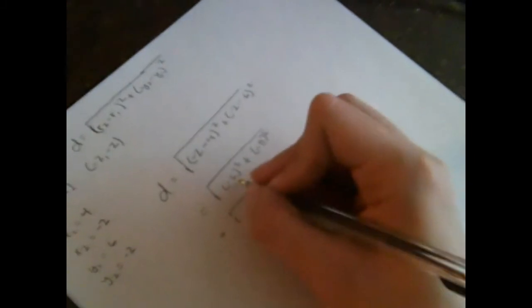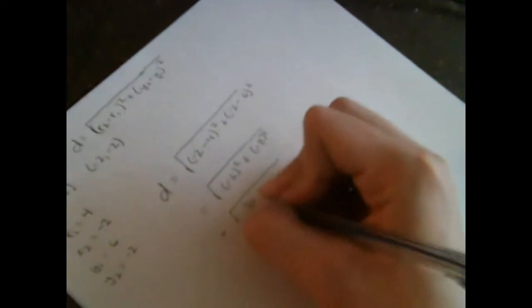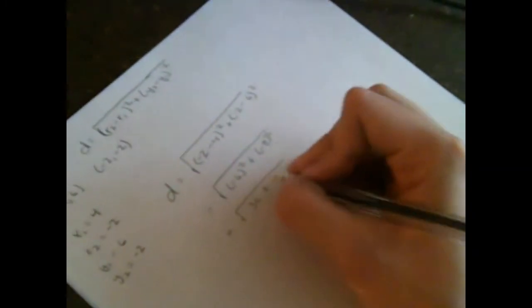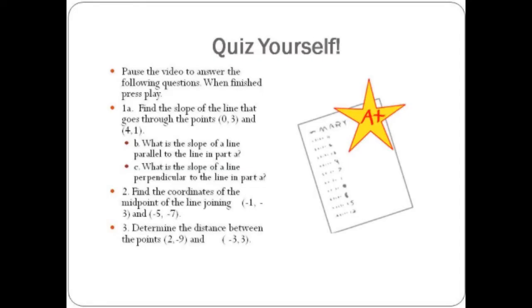Reducing this, we get negative 6 squared, negative times negative is positive, which gives us 36, plus negative 8 squared, which gives us 64. From here, we reduce further, 36 plus 64 gives us 100, and the square root of 100 is 10. So the solution is 10 units. Pause the video to finish the following questions.